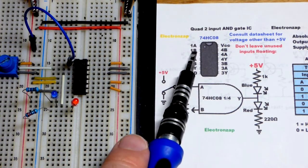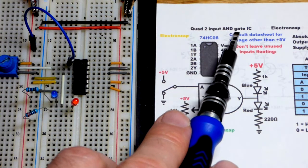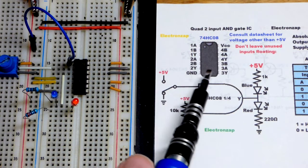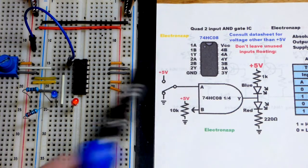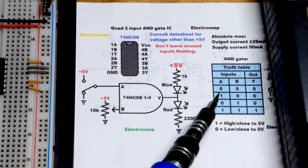The AND means that both the inputs have to be high for the output to be high. There's the truth table right now. I have the power supply off so the LEDs are off.